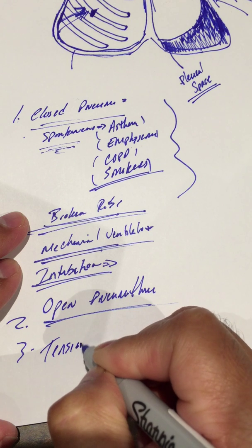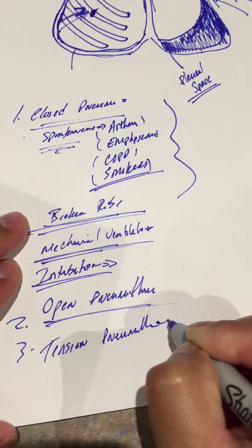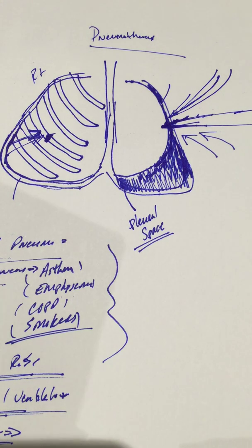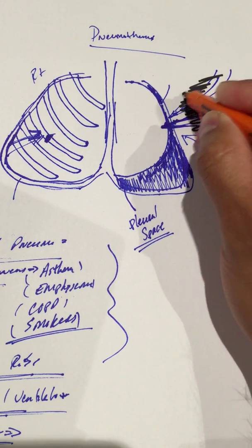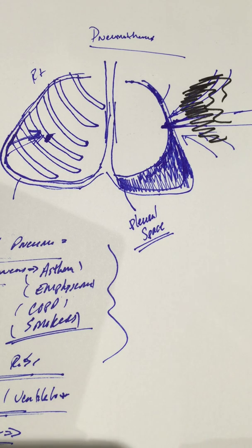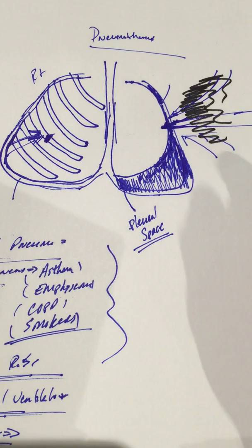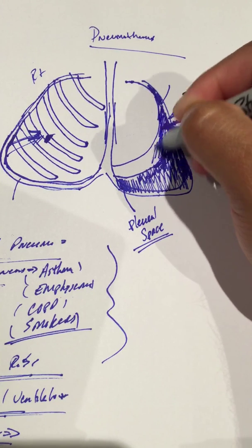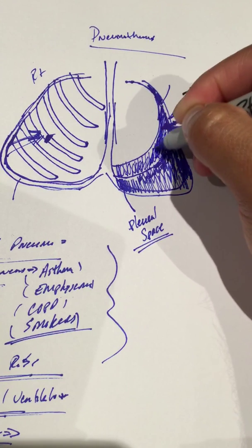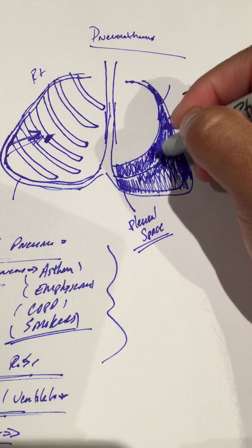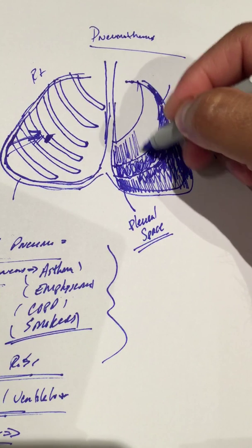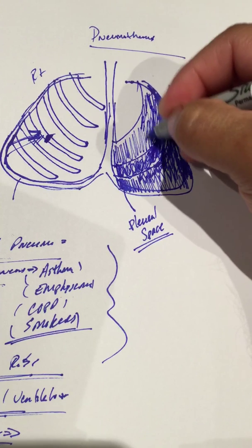Three: tension pneumothorax. In a tension pneumothorax, you're going to have increased air in the thoracic cavity. We talked about how increased air causes pressure on the lungs, causing that lung to collapse. In a tension pneumothorax, the air pressure occurs very very rapidly. The amount of pressure that is exerted is very very high, and the lung may collapse extensively.